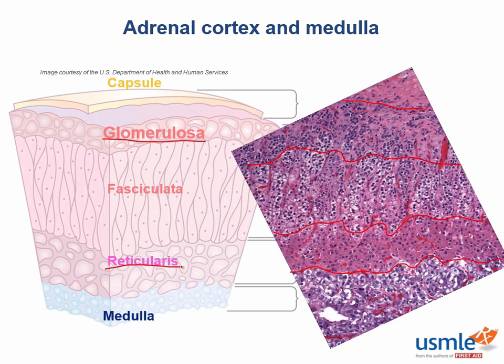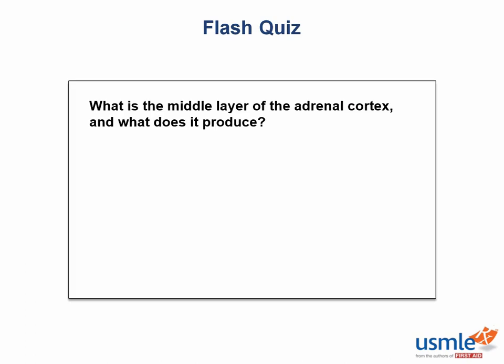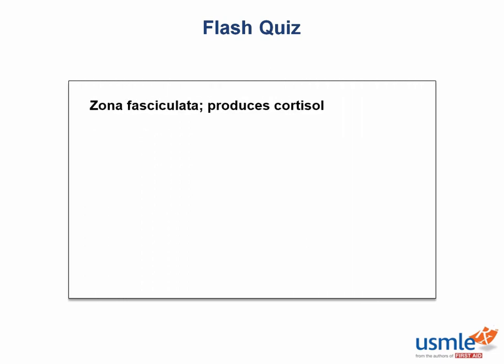You got all that? Good, because now it's time for another flash quiz. What is the middle layer of the adrenal cortex, and what does it produce? The answer is the zona fasciculata, which produces cortisol. Not so painful, right? I think that's about enough for the adrenal gland. Let's move on to the captain of the SS endocrine itself — the pituitary gland.